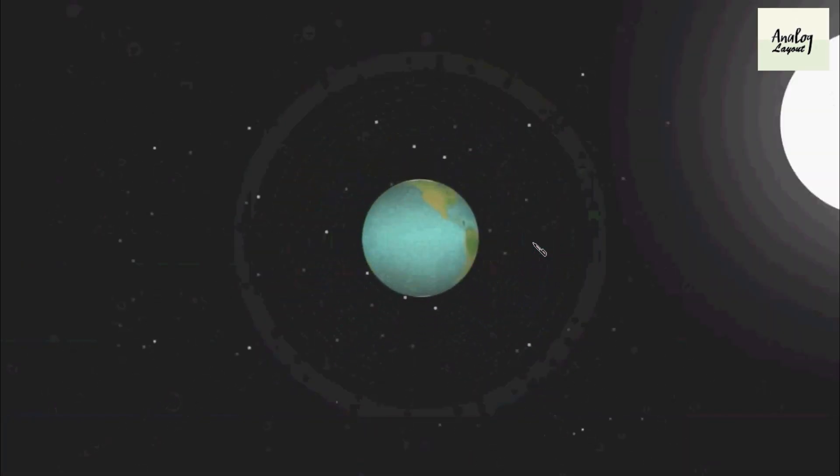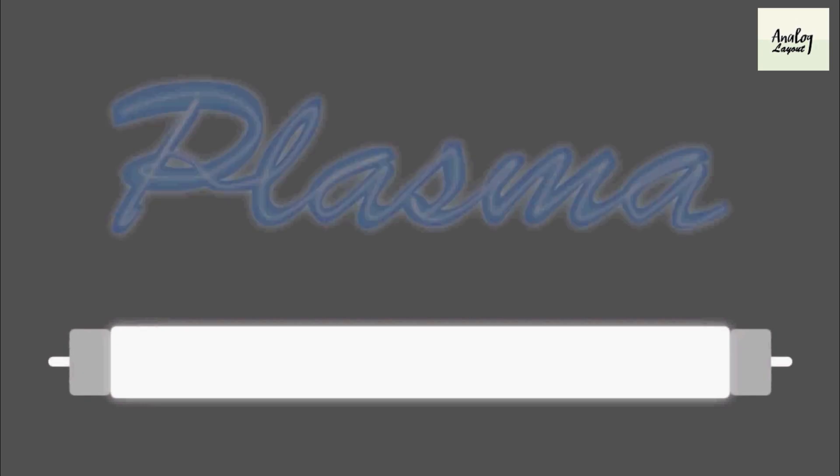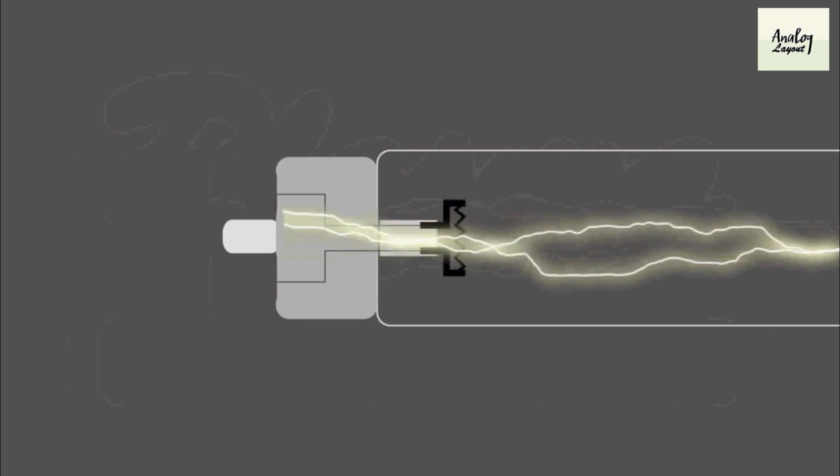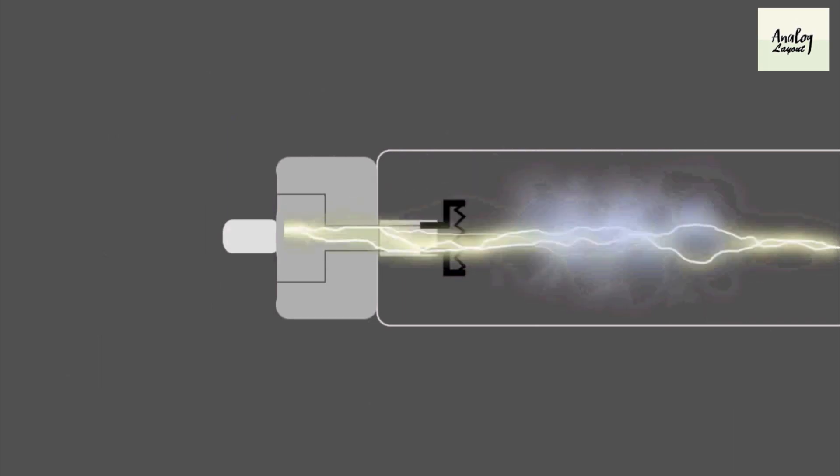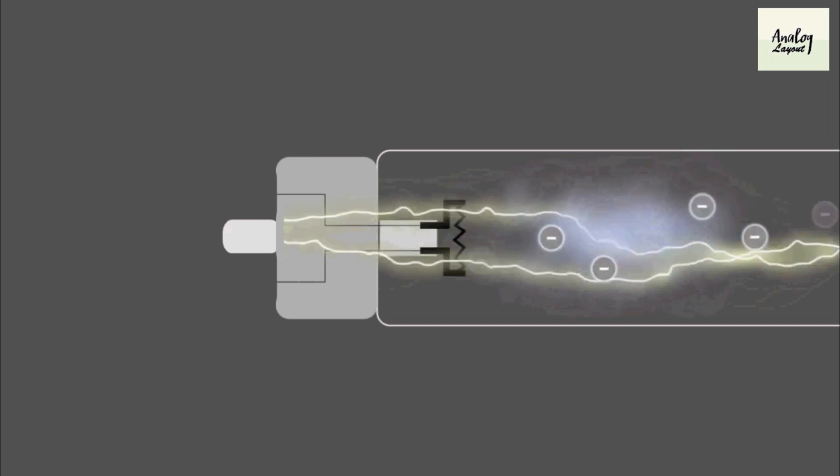The best example for plasma is stars. Another best example for plasma energy is a tube light. Everywhere tube light is a form of plasma. Whenever sufficient energy is applied to the tube light, the energy is splitting the ions and creating free electrons, and the bulb is getting illuminated. So this is the form of plasma.